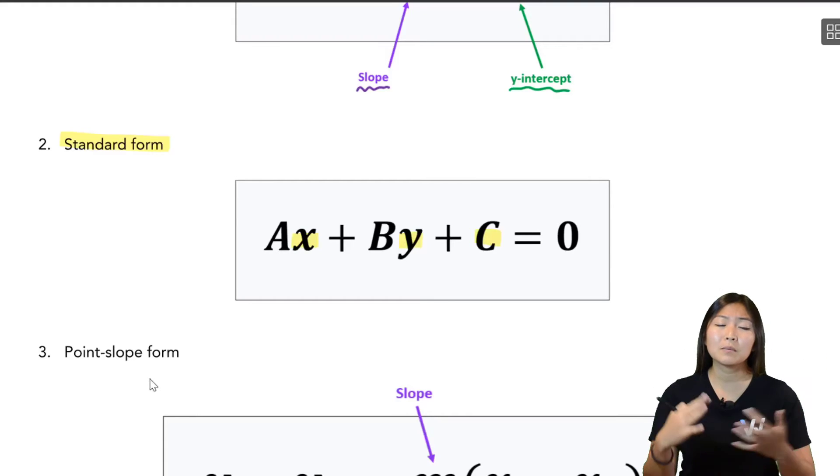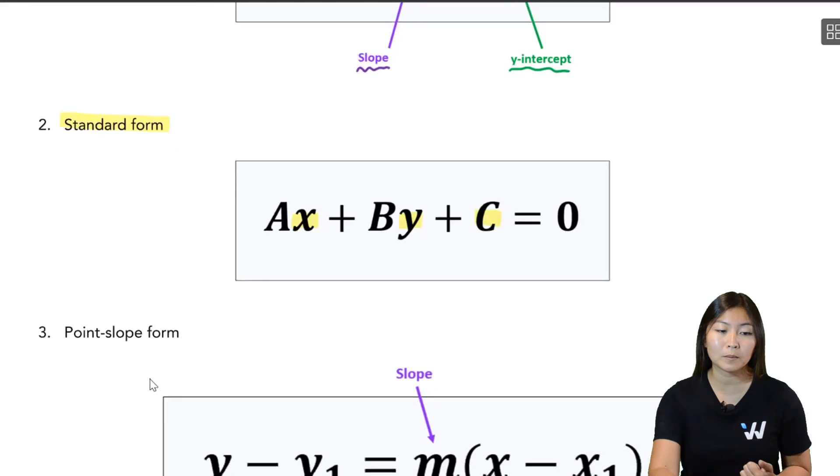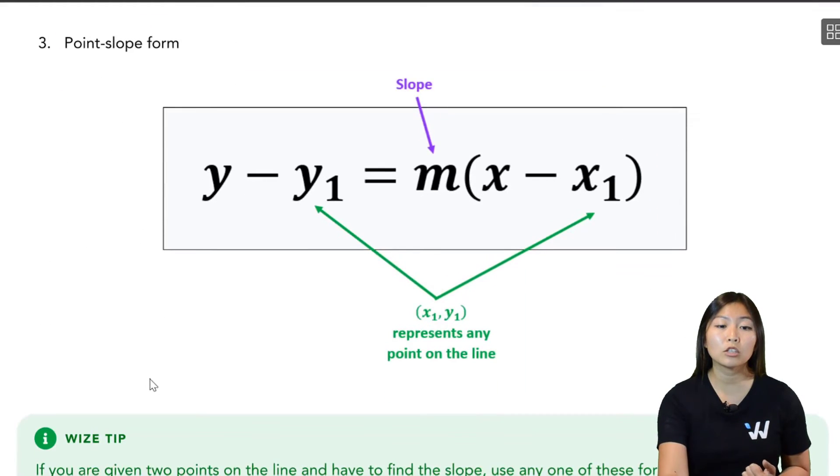Third, we have something called the point-slope form. So as the name suggests, it will give you information about one point on the line and the slope of the line. So this is how this looks like: it's y minus y1 equals m times x minus x1.